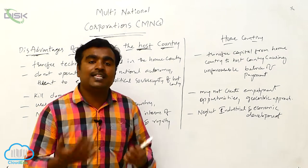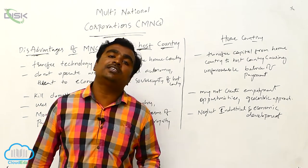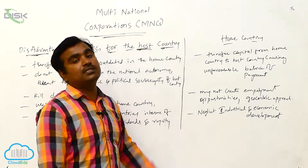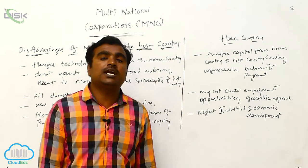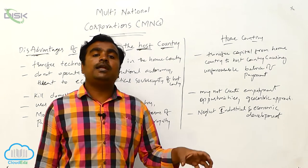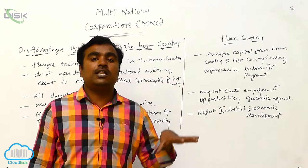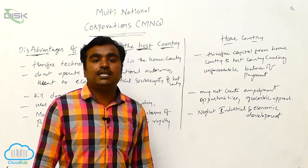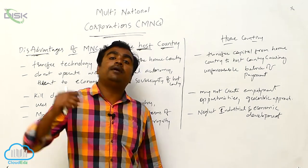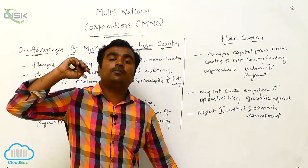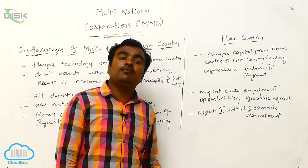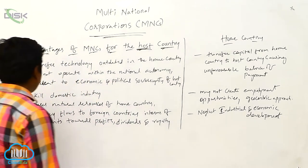MNCs use the natural resources of the host countries for their profits. They exploit the natural resources of the host country, causing a depletion of those natural resources. The profits are taken back to the home country of the MNC, while the host country suffers the depletion.